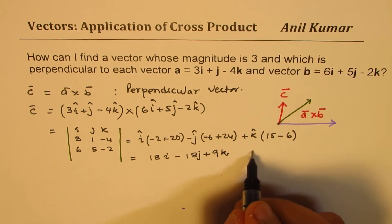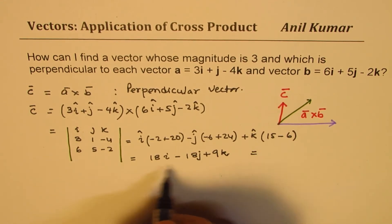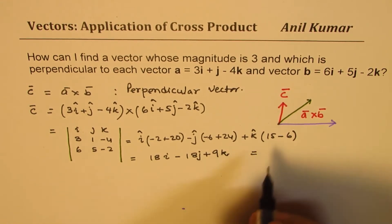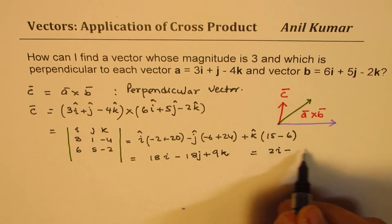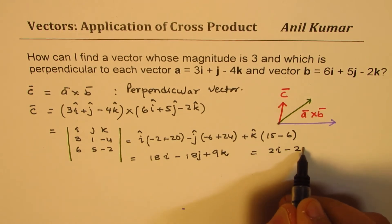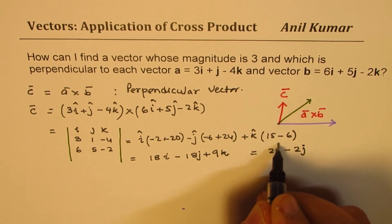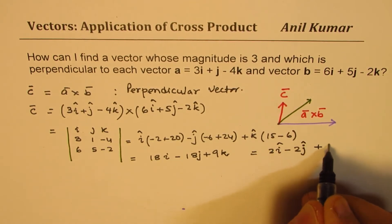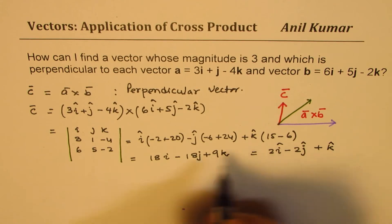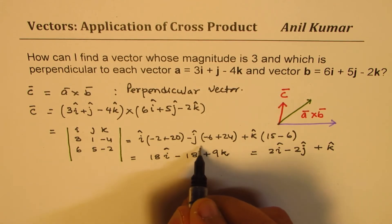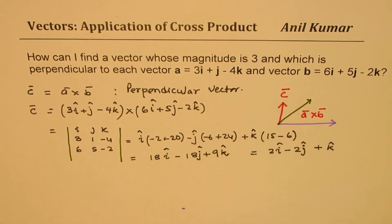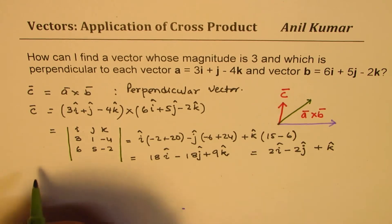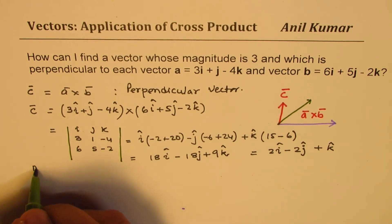We could also write this by dividing all components by 9, giving us 2i − 2j + k. That becomes the vector. Now the second part is that we want a magnitude of 3.